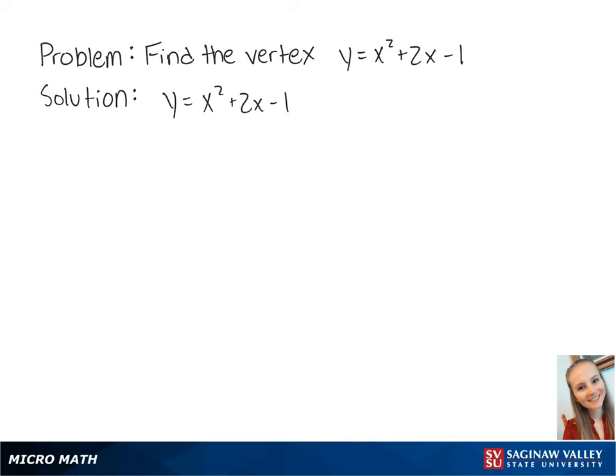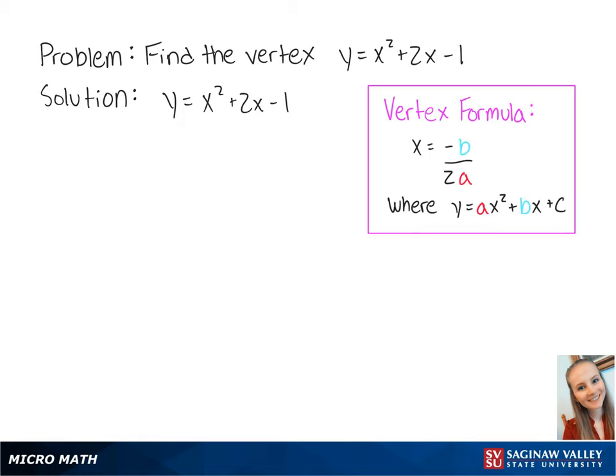For this problem, we want to find the vertex of the equation y equals x squared plus 2x minus 1. To find the vertex, we can use the vertex formula.